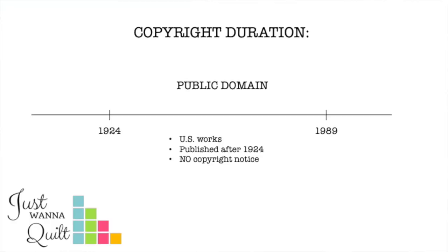This is part two — between 1924 and 1989. A little bit more complicated. The first thing to do is look and see if there's a copyright notice on the thing you're looking at. If you see no copyright notice and it's published in the US — this is super important, just domestic — no copyright notice means it's in the public domain. So: no notice, public domain; published in the US, no notice, public domain.